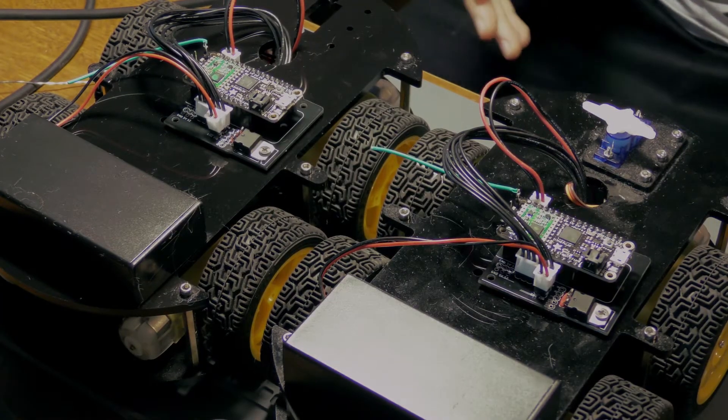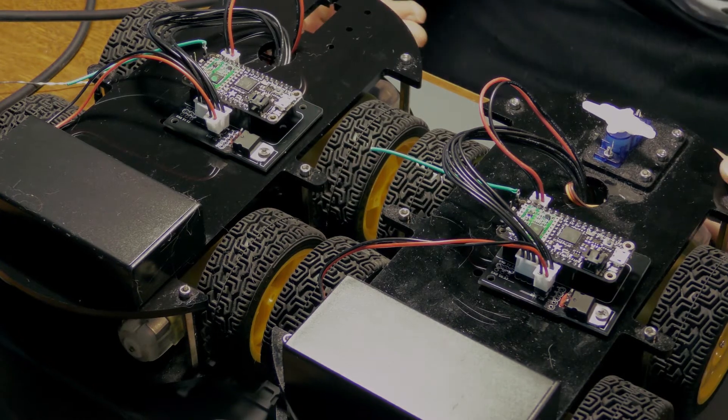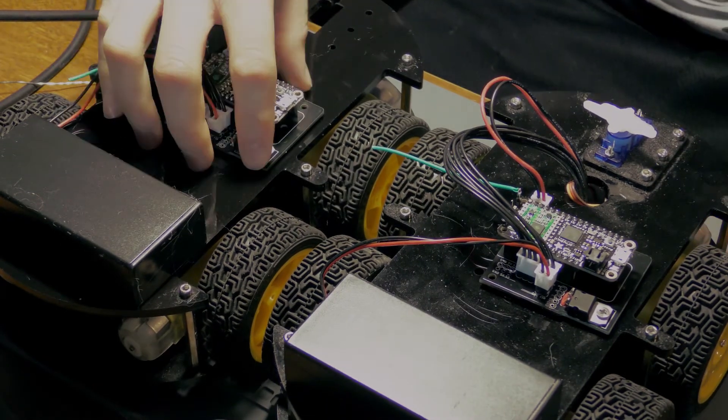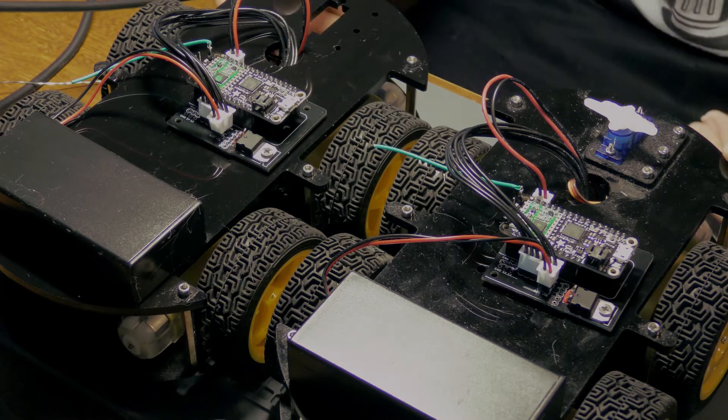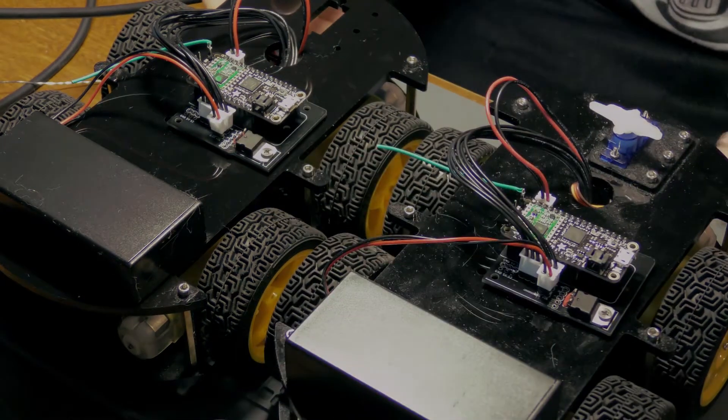So here we have the two Elegoo smart car v3 chassis, and each one now has the fully assembled PCB on it as well. What happens is one of them is designated as the leader and the other one is the follower.